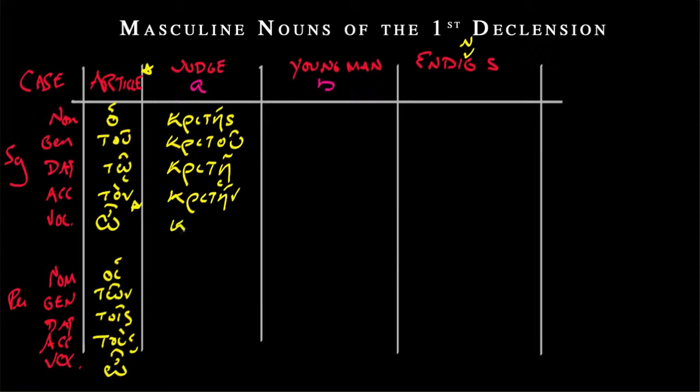Now, the vocative is interesting. We're going to have a short alpha. So I'll mark that as short. Again, your textbook won't do that. But then, a cute accent over that alpha. O, krita. We'll notice this when we get to second declension nouns. In the nominative, they tend to end in omicron sigma in the masculine. And then end with a short epsilon. So you'd say, oh, adelphe. Oh, brother. With a short epsilon. This is the same sort of pattern we see here. But for right now, just note that we have ho kritis, tu kritu, to krite, ton krite, and then o krita. Now, let's move to the plural.